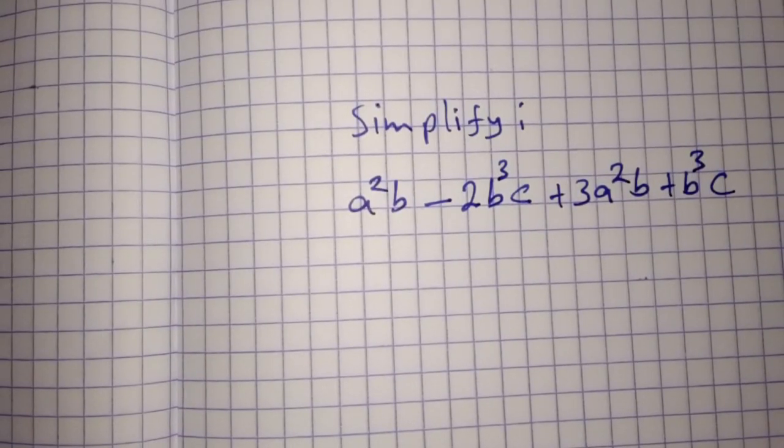Simplify a²b minus 2b³c plus 3a²b plus b³c.